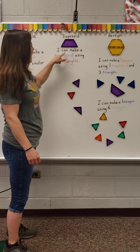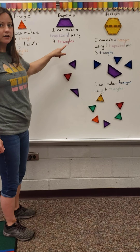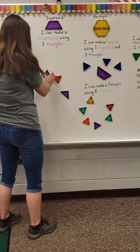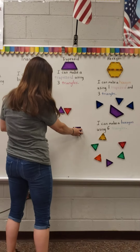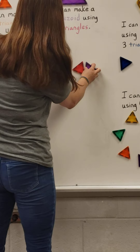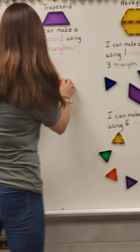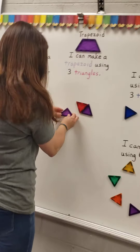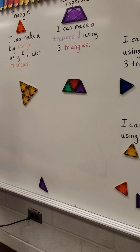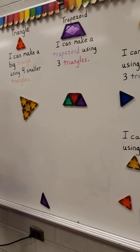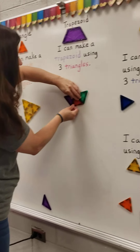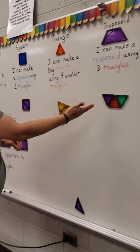So my trapezoid — I can make a trapezoid using three triangles. I've got three triangles here. I'm going to compose my trapezoid. And again, it doesn't matter if my trapezoid is facing that way or this way, it is still a trapezoid.